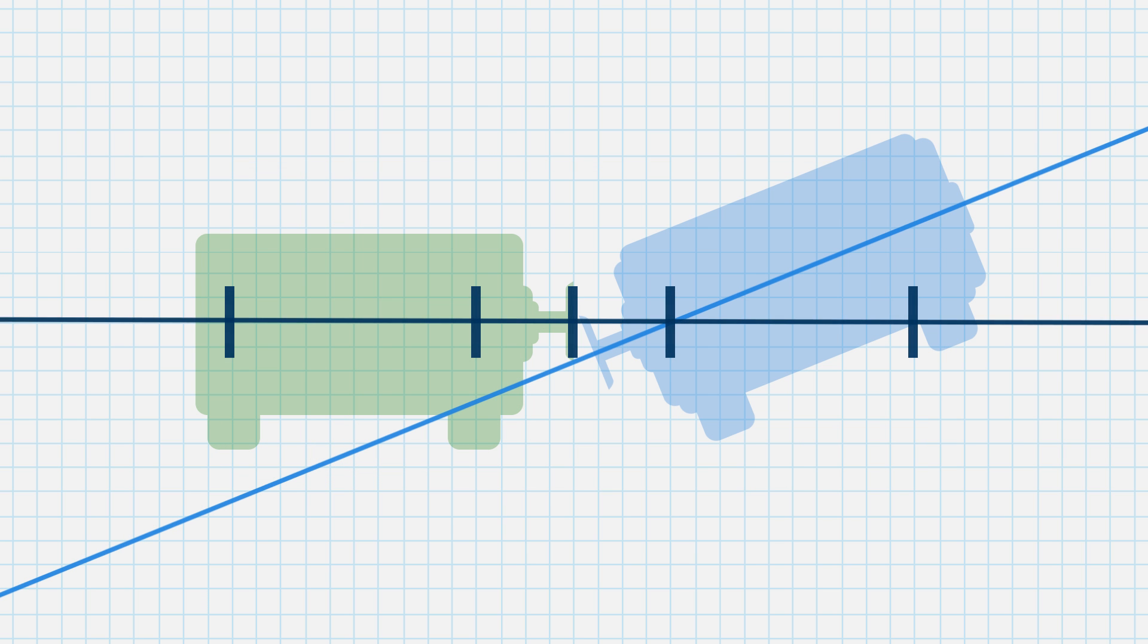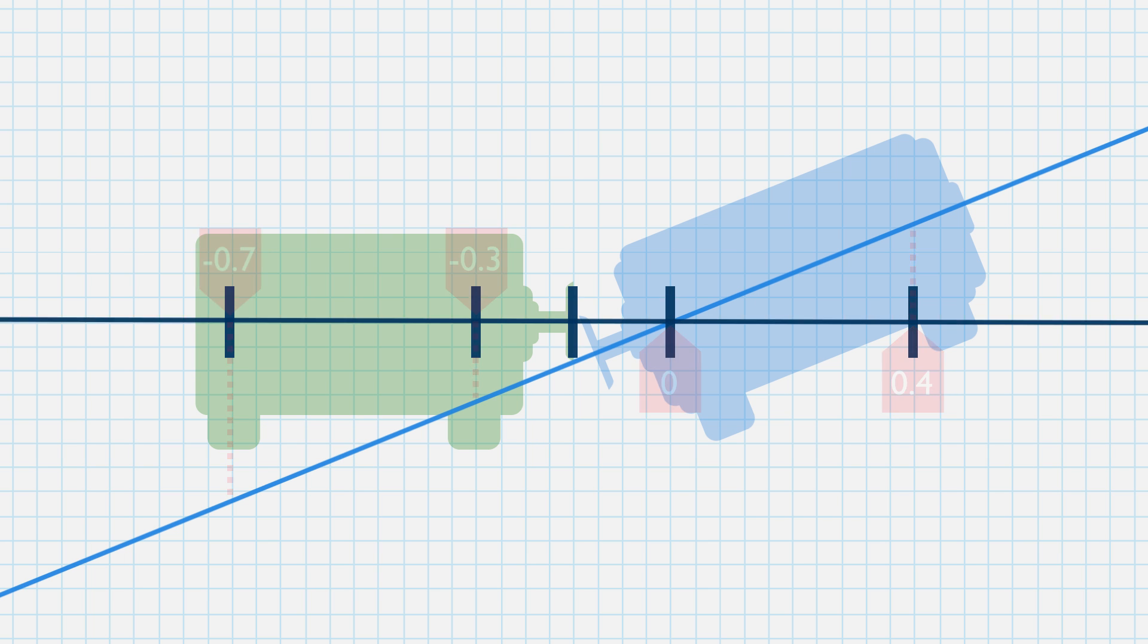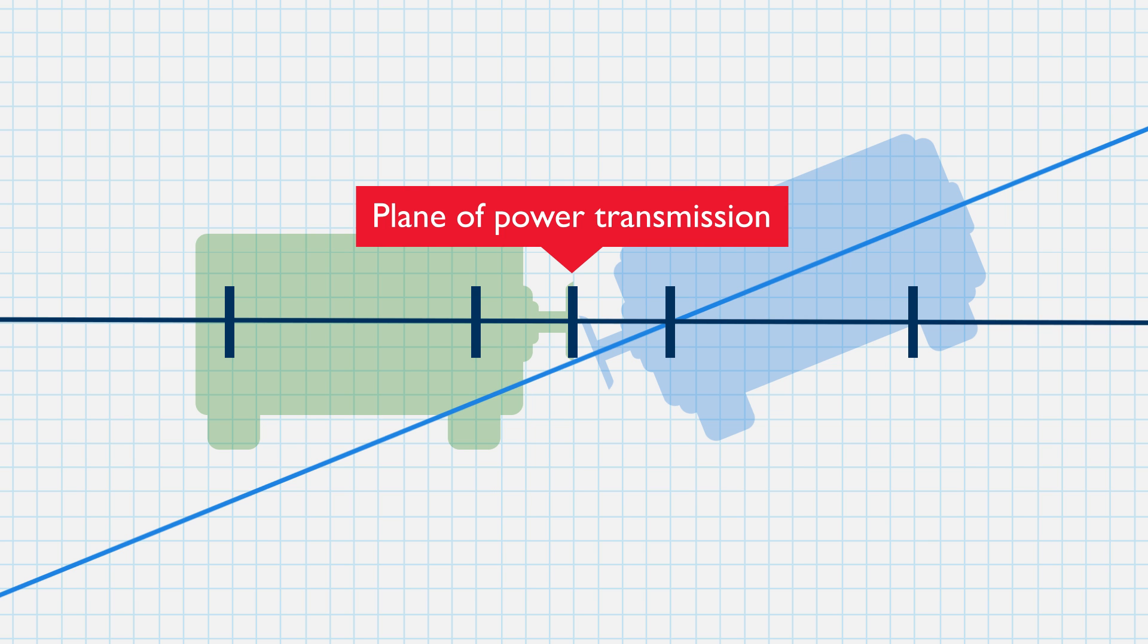Now, what about the offset? As you can see from the graph, the offset is now a different amount at every point along the shaft centerlines. You might ask, why is the offset expressed as a single number? It is because there is a standard reference point for offset misalignment, here at the plane of power transmission, typically at the center of the coupling.